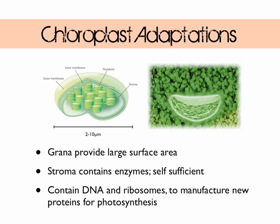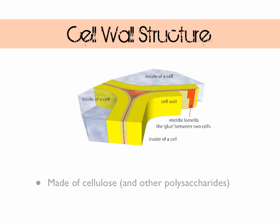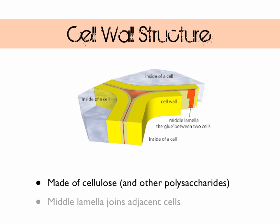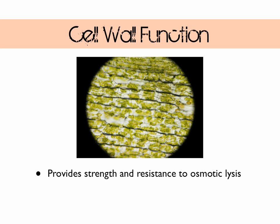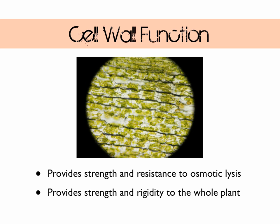Let's move on and look at the cell wall. We know that it's made mostly of cellulose arranged into fibrils, as discussed in the previous video. Also present is a structure known as the middle lamella, which is the boundary between adjacent cells and acts to bind the cells together — shown as the red area in the diagram above. The cell wall provides strength and allows the cell to resist osmotic lysis. It gives the whole plant strength and rigidity, and also allows water to travel through it, contributing to the overall water movement through the plant.